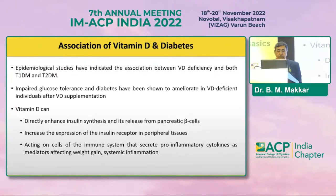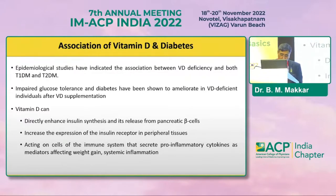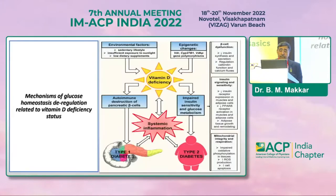There is a strong association between vitamin D deficiency and both type 1 and type 2 diabetes. Studies have shown that supplementation with vitamin D can improve glucose homeostasis in both type 1 and type 2 diabetes individuals. Vitamin D can directly enhance insulin sensitivity and insulin release from beta cells. It can increase the expression of insulin receptors in peripheral tissues, thereby improving insulin sensitivity, and can also act through immune modulation leading to decreased insulin resistance.